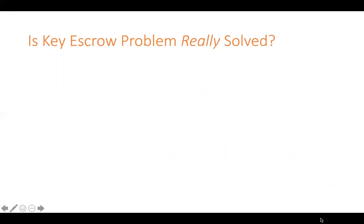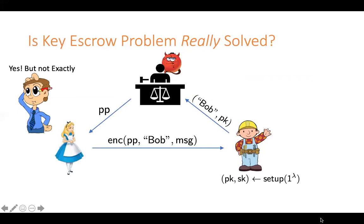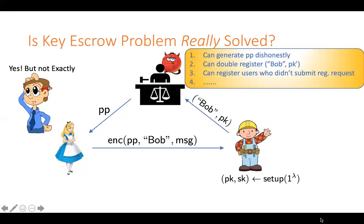The original motivation for this primitive is to solve the key escrow problem — basically, even if the authority is corrupted, we want the authority not to be able to launch any attack. Is this problem solved here? Well, yes, but not exactly. If the authority is being honest, he certainly can't do much because he is only getting Bob's public key and doesn't have any secrets. But if the authority is not being honest, he can generate public parameters in an arbitrary way. For example, the authority can register Bob twice — the first time with Bob's actual key and the second time with some other key. He can also register users that didn't sign up, users that didn't send any registration requests.